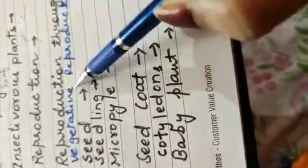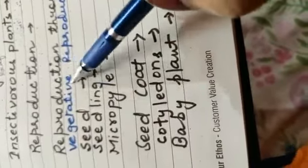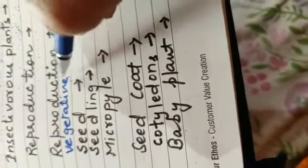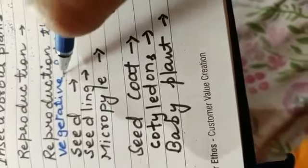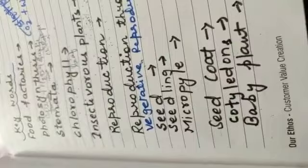The second form is vegetative reproduction. The vegetative parts of the plant are: underground stem, stem, root, and leaves. Vegetative reproduction means increasing the number of plants through these vegetative parts.